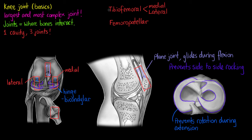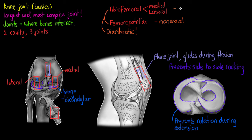That third drawing on the right-hand side is a superior view of the tibia showing the meniscus. The femoropatellar and tibiofemoral joints are diarthrotic, being freely moveable — with the femoropatellar being non-axial or a plane joint, and the tibiofemoral being biaxial, with flexion and extension permitted along with a small amount of rotation.